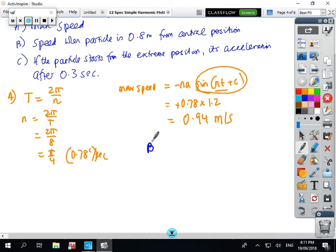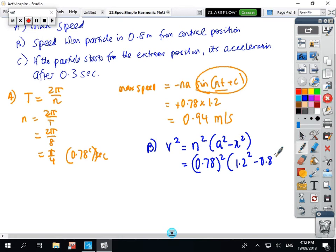Part B of the question: when the particle is 0.8. We're going to use the V² = N²(A² - X²) formula. So N is 0.78 squared, A is 1.2 squared, X is 0.8 squared. Then V equals the square root of that number. When you put that in your calculator, I've got 0.84 meters per second.